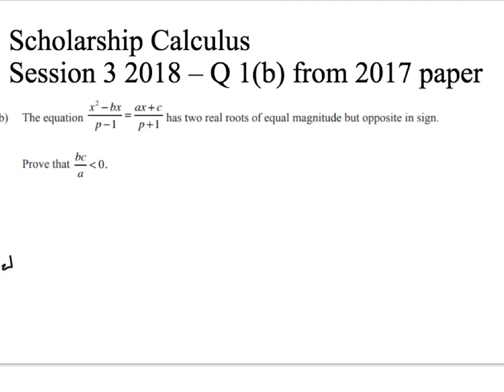Kia ora year 12 and 13. Here's question 1b from the 2017 scholarship calculus paper. There are three ways to solve this problem so I'm going to make three separate videos to explore them, and in this first one I'm going to solve this problem using the sum and product of the roots for a quadratic equation.